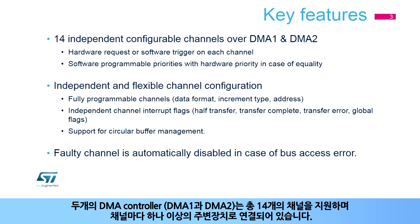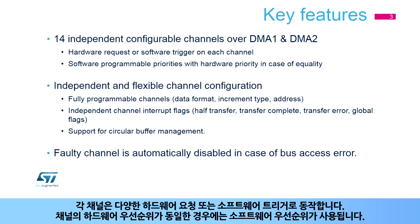The two DMA controllers, DMA1 and DMA2, have 14 channels in total, each dedicated to managing memory access requests from one or more peripherals. Each channel has flexible hardware requests or software trigger. The channel software priority is programmable, and a hardware priority is used in case of equality.